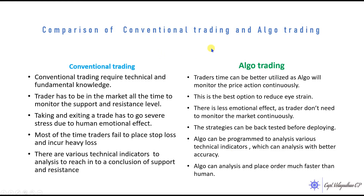A comparison of conventional trading and Algo trading: for conventional trading, a minimum knowledge on technical analysis and some level of fundamental knowledge is a must. The trader has to be in the market all the time to monitor support and resistance levels. No one can predict the market — it moves its own way. So we have to glue our eyes to the market to monitor when support breaks or resistance holds. We have to monitor continuously.